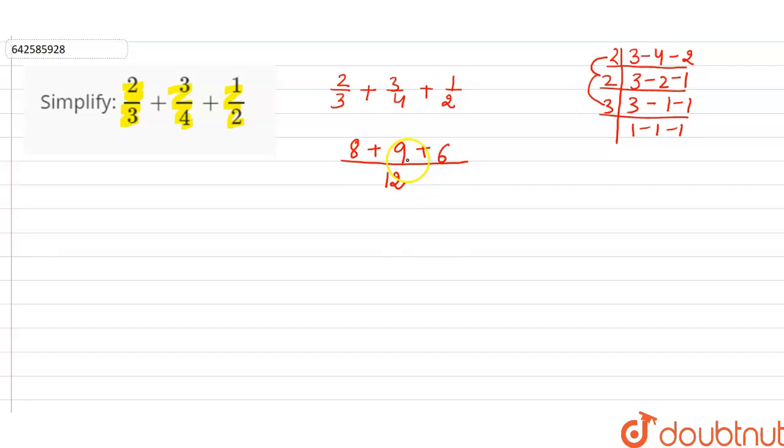Now, 8 plus 9 is 17. 17 plus 6 is 23. So it's 23 divided by 12. 23/12 is the required solution for the given question.